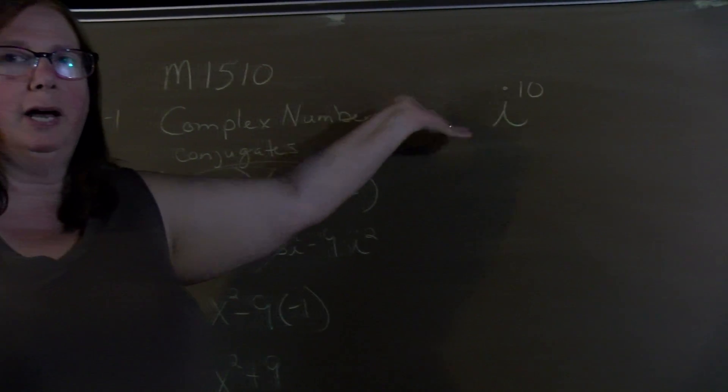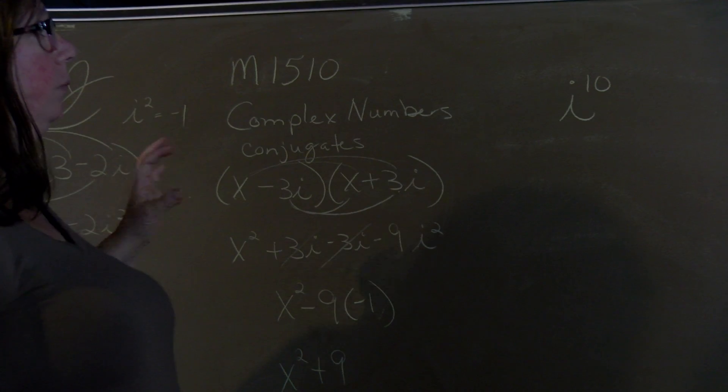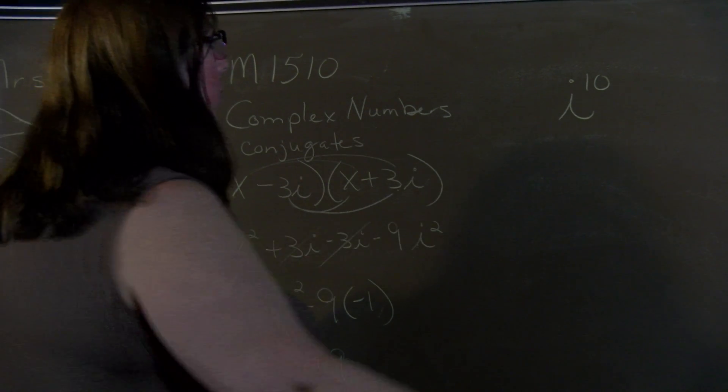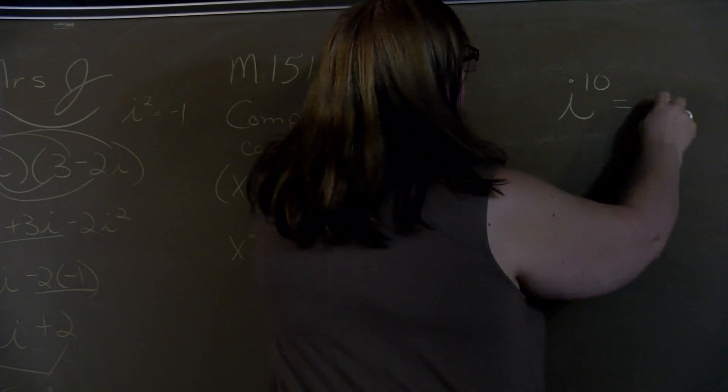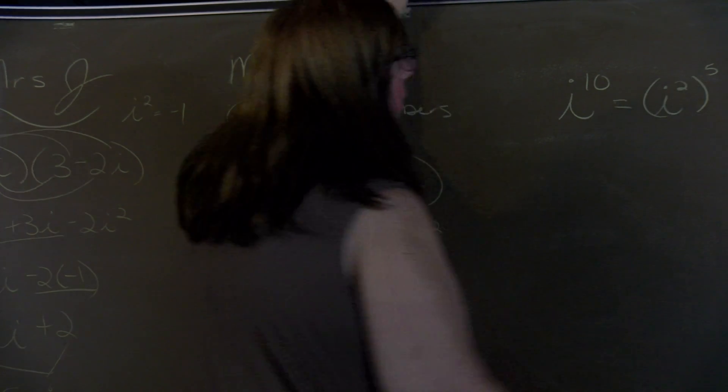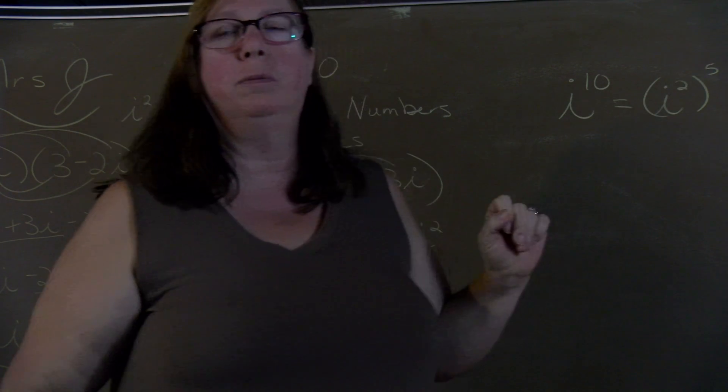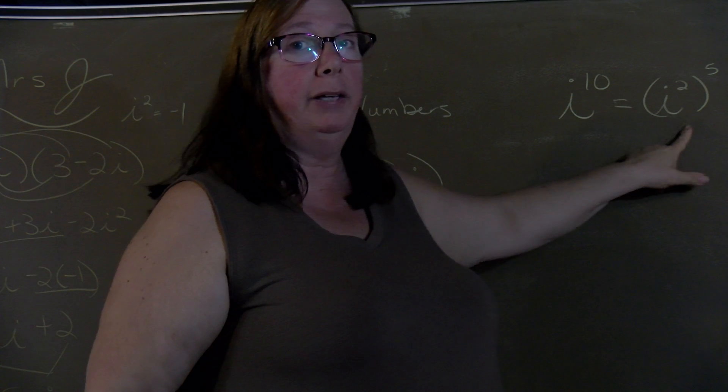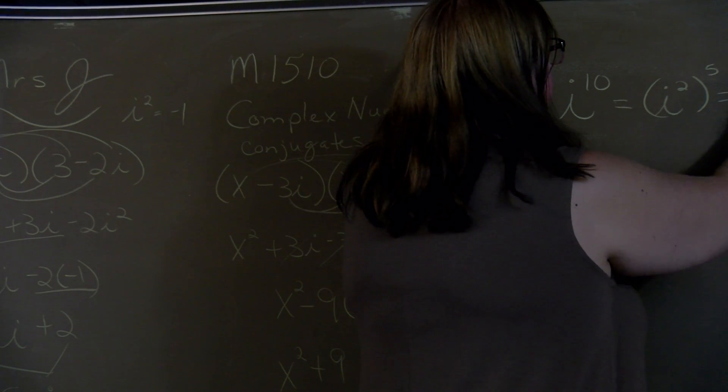And in some cases, we'll work with higher powers than just i squared. And what you can do is rewrite it as i squared. What I mean is, this could be written as i squared to the fifth. Because remember, an exponent to an exponent is multiplied. 2 times 5 is 10. We know i squared is a negative 1.